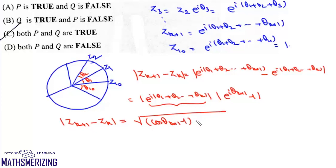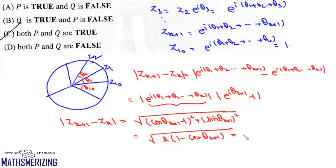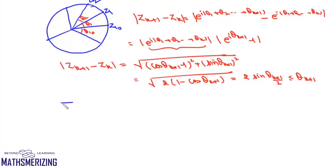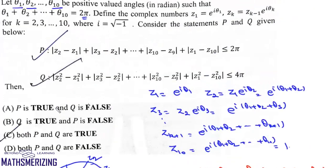Expanding: cos²θ_{k+1} + sin²θ_{k+1} = 1, so this becomes √(2 - 2cosθ_{k+1}) = 2sin(θ_{k+1}/2). Since sin(θ) ≤ θ, this is less than or equal to θ_{k+1}. Taking the summation, Σ|z_{k+1} - z_k| ≤ Σθ_{k+1} = 2π. So statement P is correct: the sum of these moduli is less than or equal to 2π.